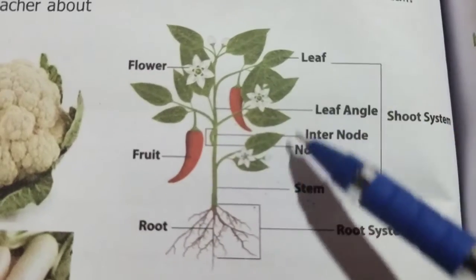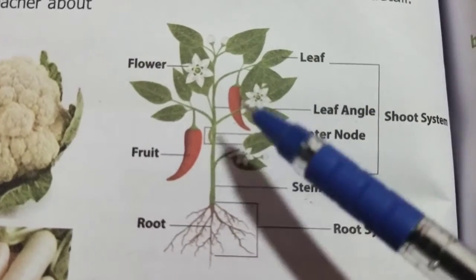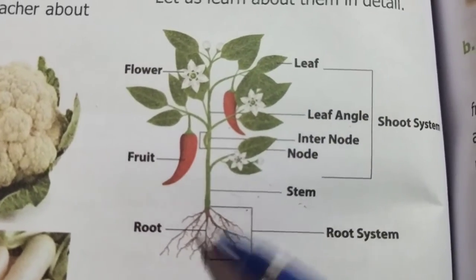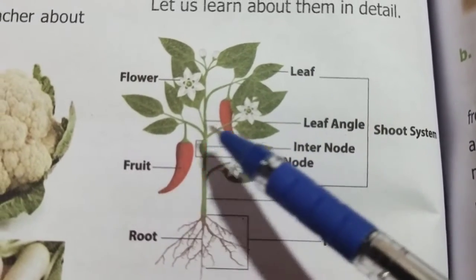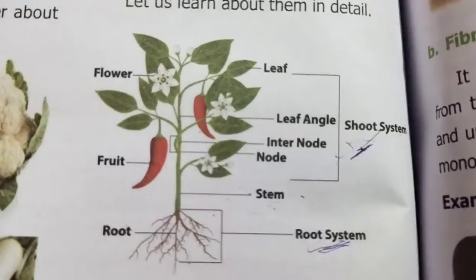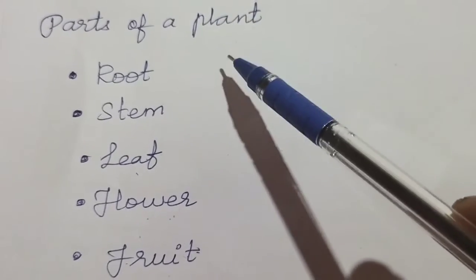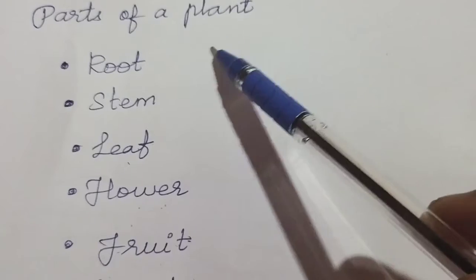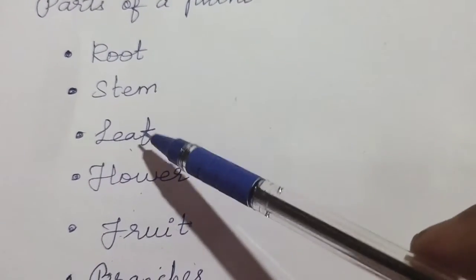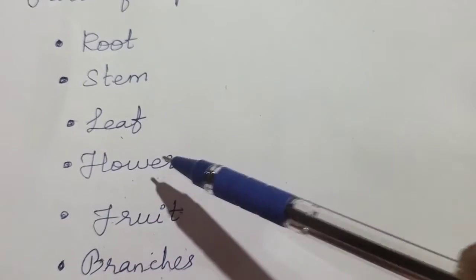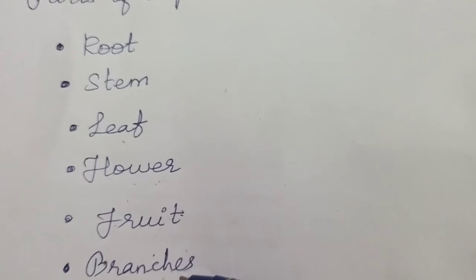So these are the important parts of a plant. Students, like human beings, the plants also have so many important parts in their body. Okay students, once again we will discuss the parts of your plant. The plant has some important parts. They are root, stem, leaf, flower, fruit and branches.